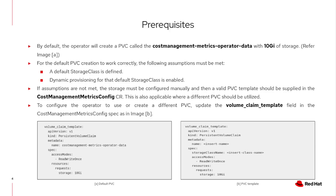In these cases, storage must be manually configured. After configuring the storage, a valid PVC template should be supplied in the cost management metrics config CR. Also, if a different PVC should be utilized, a valid PVC template should be supplied in the cost management metrics config CR. To configure the cost management metrics operator to use or create a different PVC, add the desired configuration to the volume claim template field in the cost management metric config spec, as shown in image B.